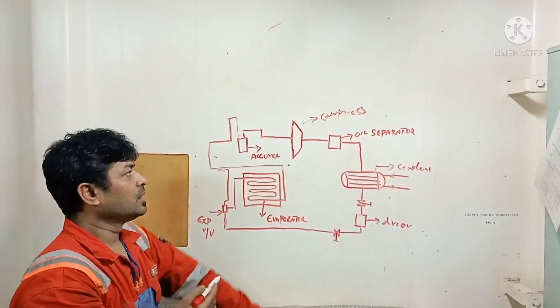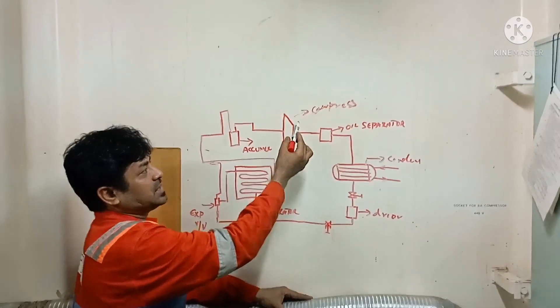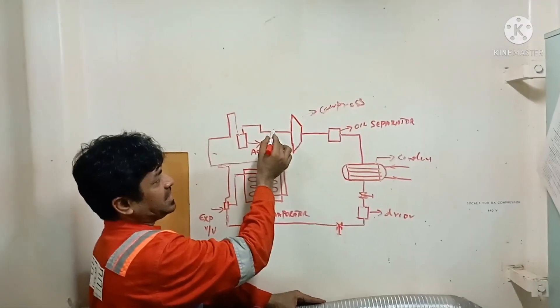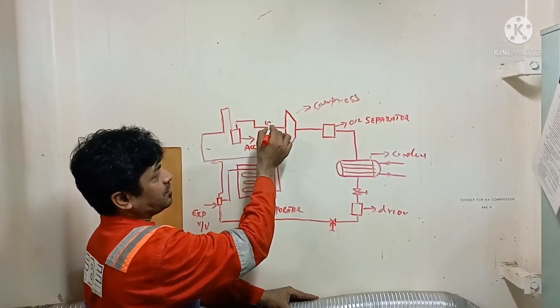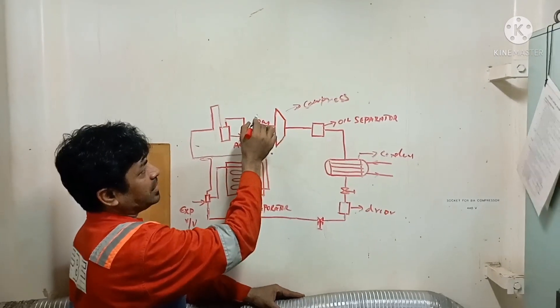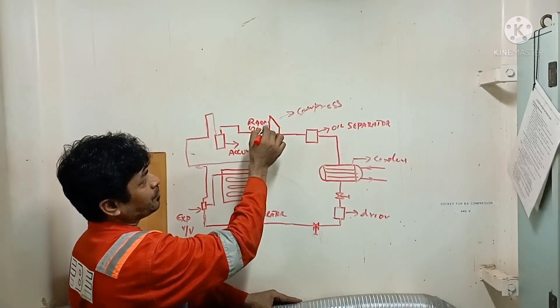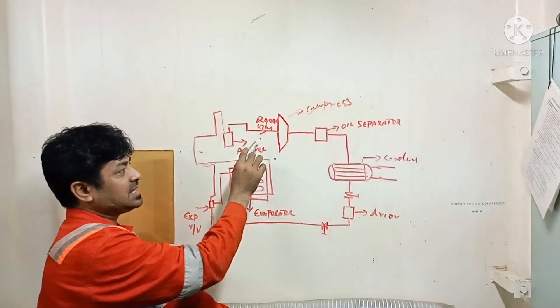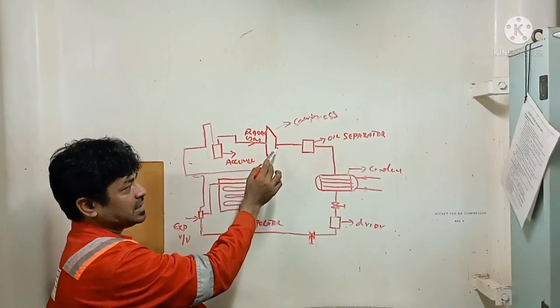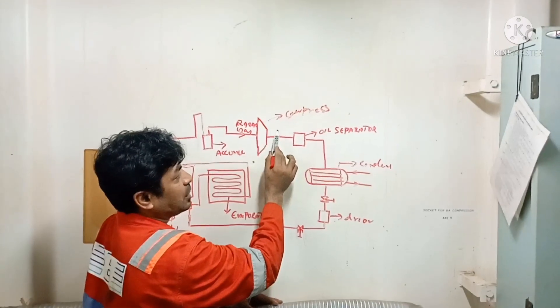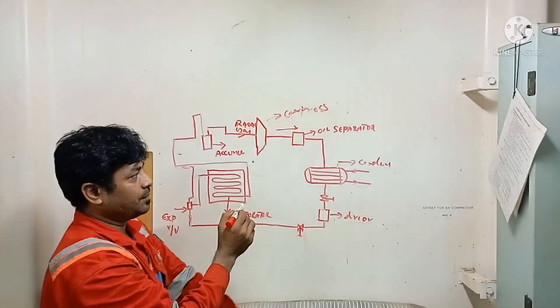How it works: this is your compressor. The compressor takes gas, this is your cooling gas, say R404A. This refrigerant gas will be taken by suction by the compressor and the delivery of the compressor will go to the oil separator.